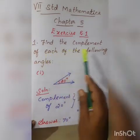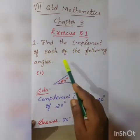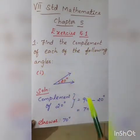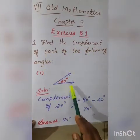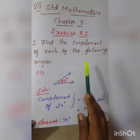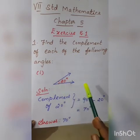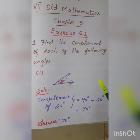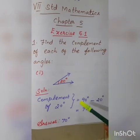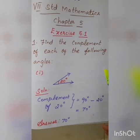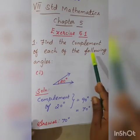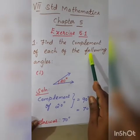The first sum: find the complement of each of the following angles. The first angle is 20 degrees. We find out the complement of this angle. Complementary angles means the sum of two angles is 90 degrees — that is a complementary angle.